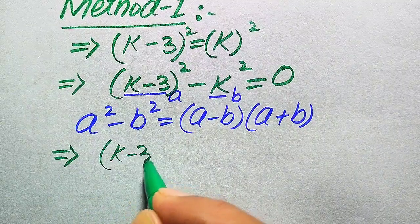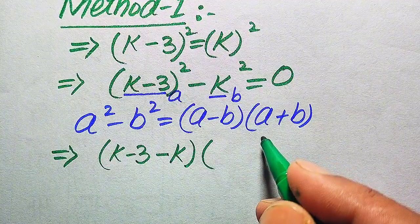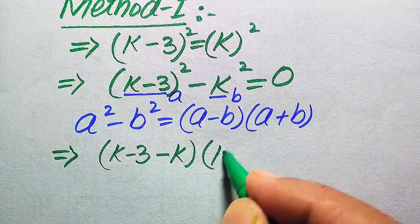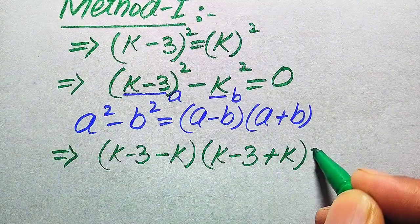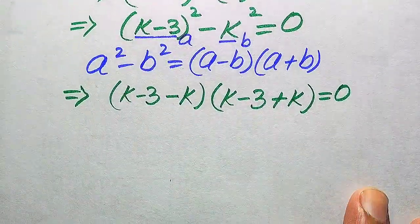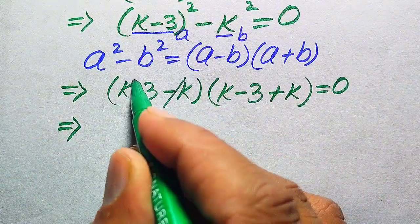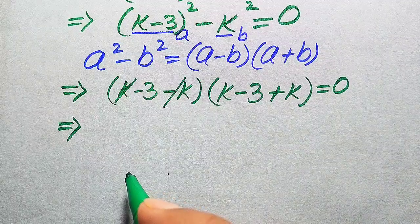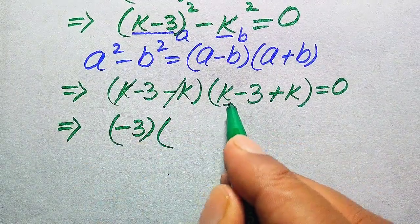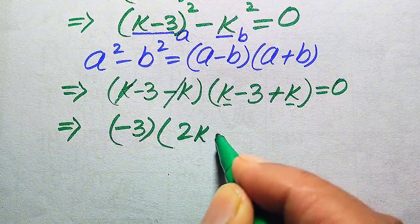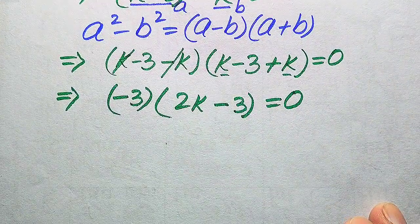After applying the formula, we write the equation as (k minus 3 minus k)(k minus 3 plus k) equals zero. Here, the negative k and positive k cancel out, giving us minus 3 times (2k minus 3) equals zero.